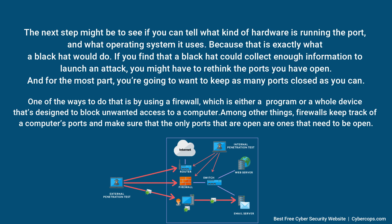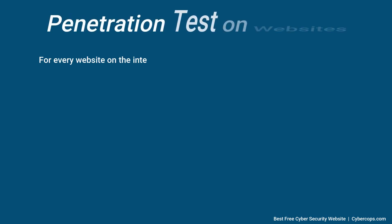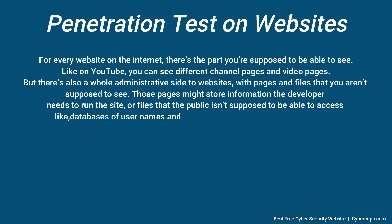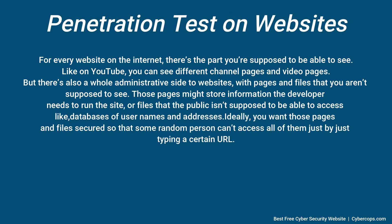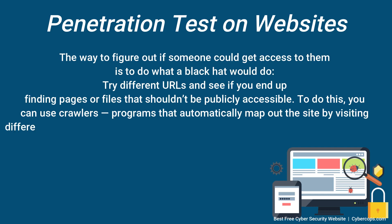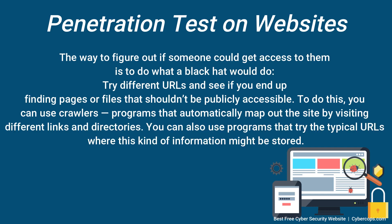Once you've done some recon, you may want to move on to protecting against attacks that take advantage of your specific setup. For every website on the internet, there's the part you're supposed to be able to see — like on YouTube, you can see different channel pages and video pages. But there's also a whole administrative side to websites with pages and files that you aren't supposed to see. Those pages might store information the developer needs to run the site, or files the public isn't supposed to access, like databases of usernames and addresses. You want those pages secured so a random person can't access them just by typing a certain URL, and the way to figure out if someone could is to try different URLs and see if you end up finding pages or files that shouldn't be publicly accessible.